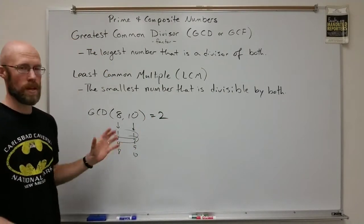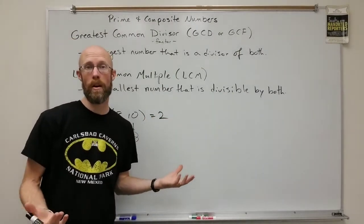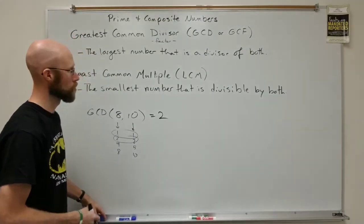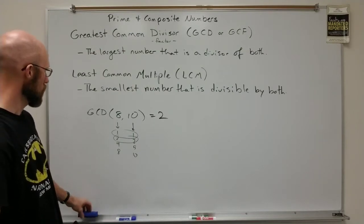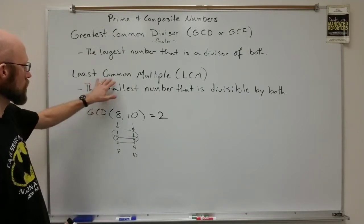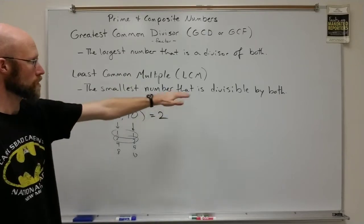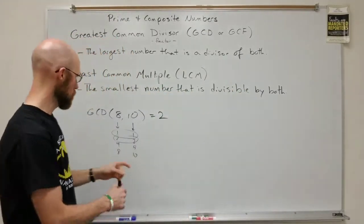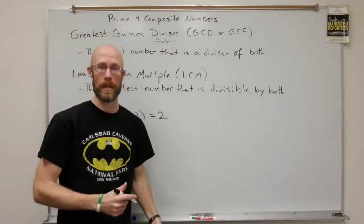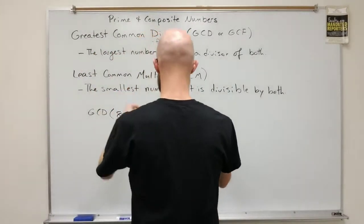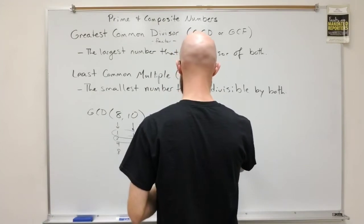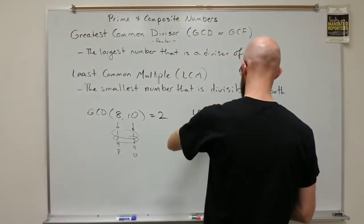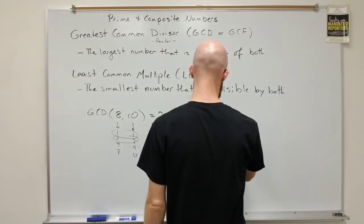Now that one's kind of a basic example. They get a lot harder if the numbers are bigger or have more factors. Now, the least common multiple is the smallest number that's divisible by both. In other words, both 8 and 10 would have to be divisors of something larger. So the least common multiple, LCM, and we'll go with 8 and 10 here again just for a moment.